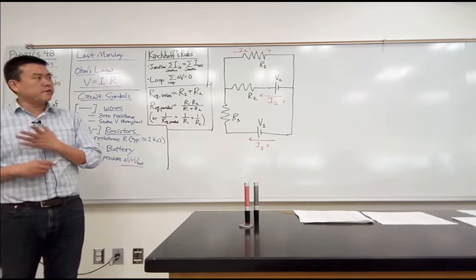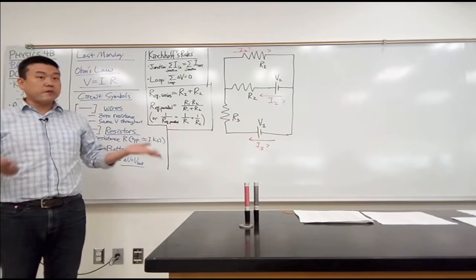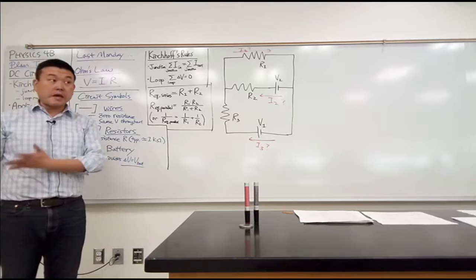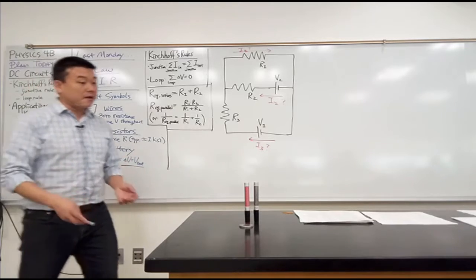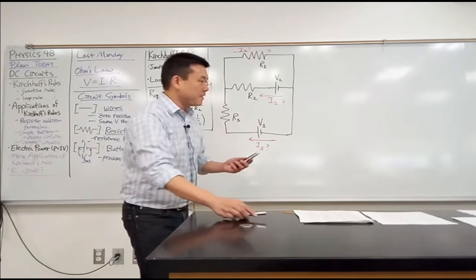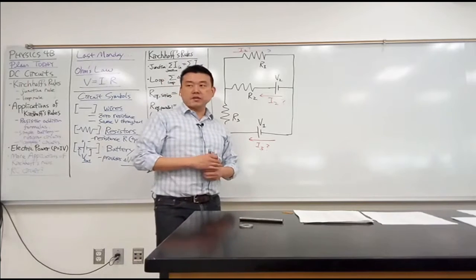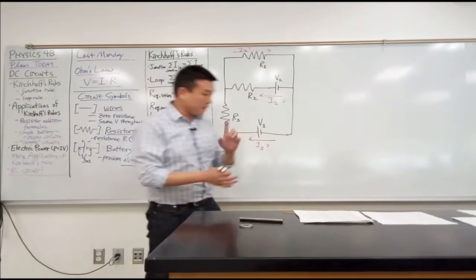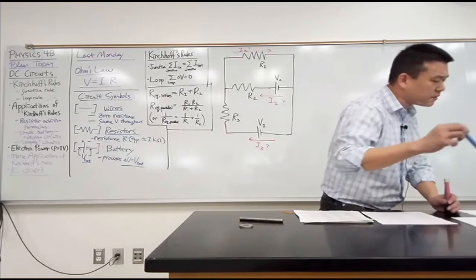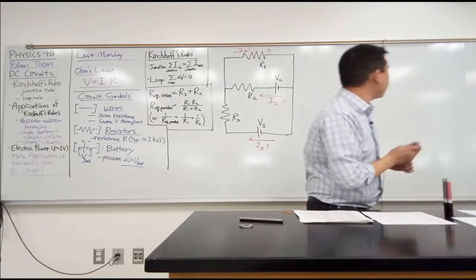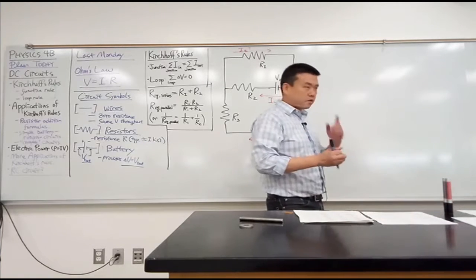So I should go over the definition of what it means for two resistors to be in series and what it means for them to be in parallel. Because the language that we are using is rooted in what it looks geometrically. But let me give you this picture and have you tell me if this represents a resistor in series or parallel.